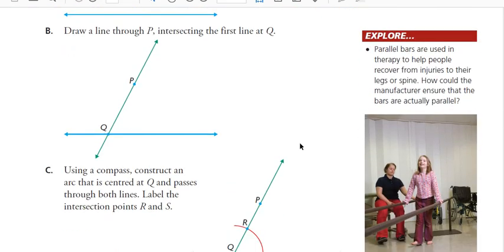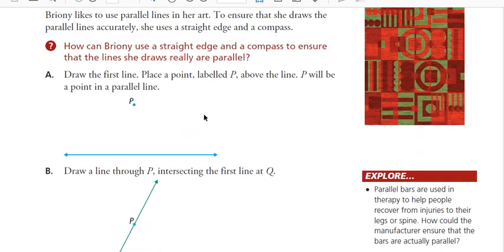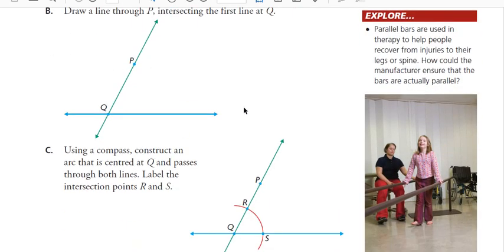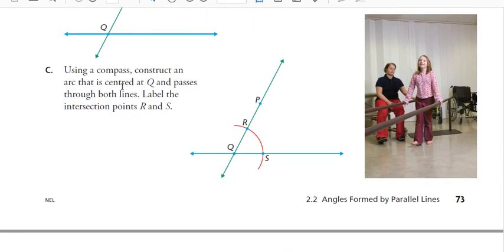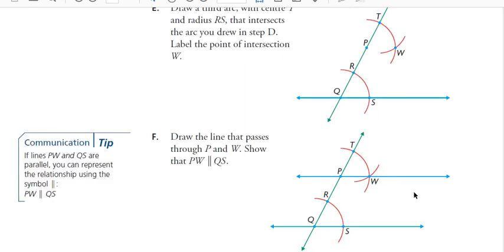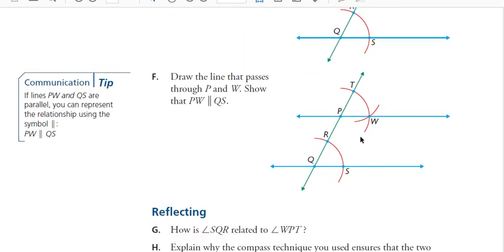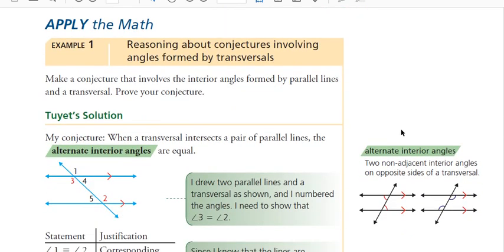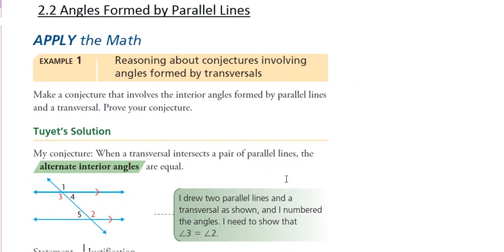So for 2.2, I'm going to have you bypass the first example. Constructing angles using a compass and a straight edge — this arc is created when you put the pointy part of the compass here and swing the pencil part around. This is a way you can construct two parallel lines without a protractor, just with a compass and a straight edge. If you're interested, you can look into that. What I do want to focus on is getting to know these new types of angles, so we're going to look at example one.